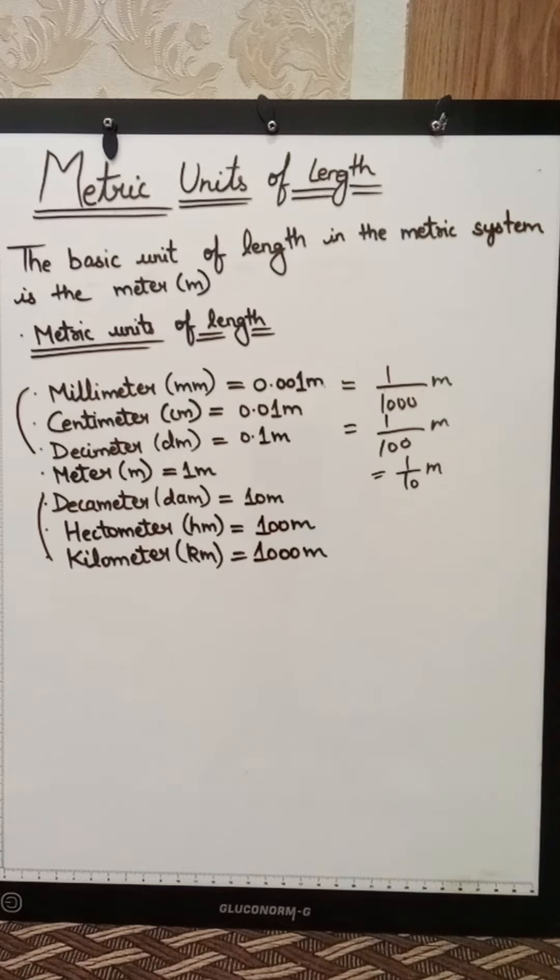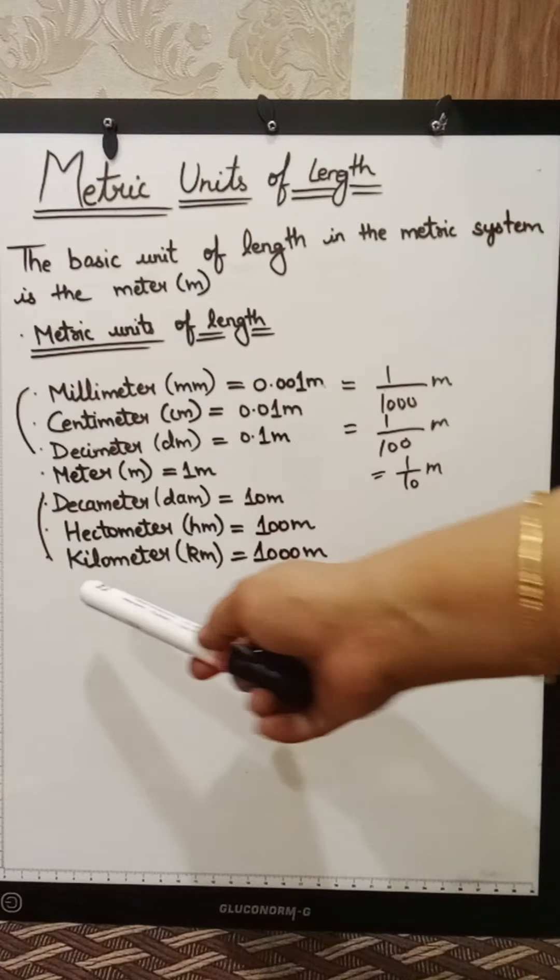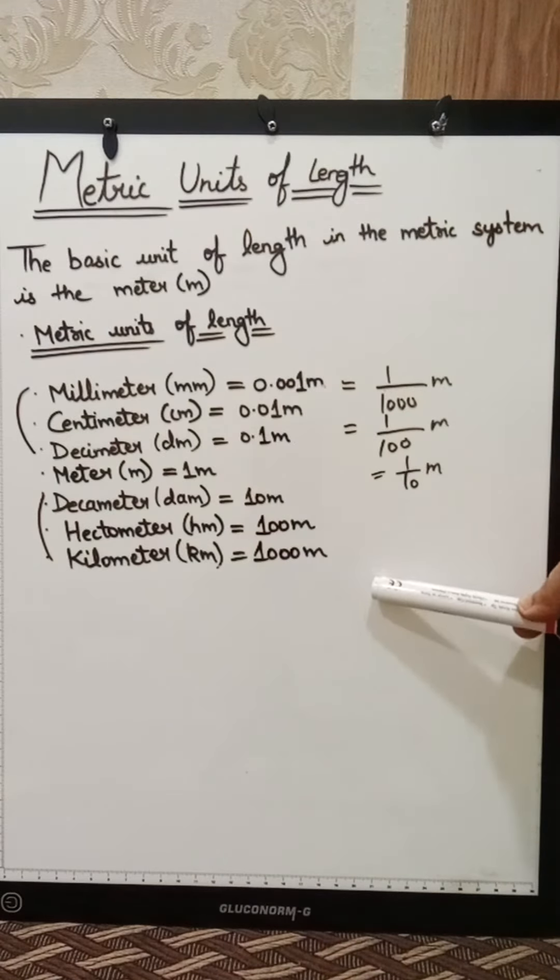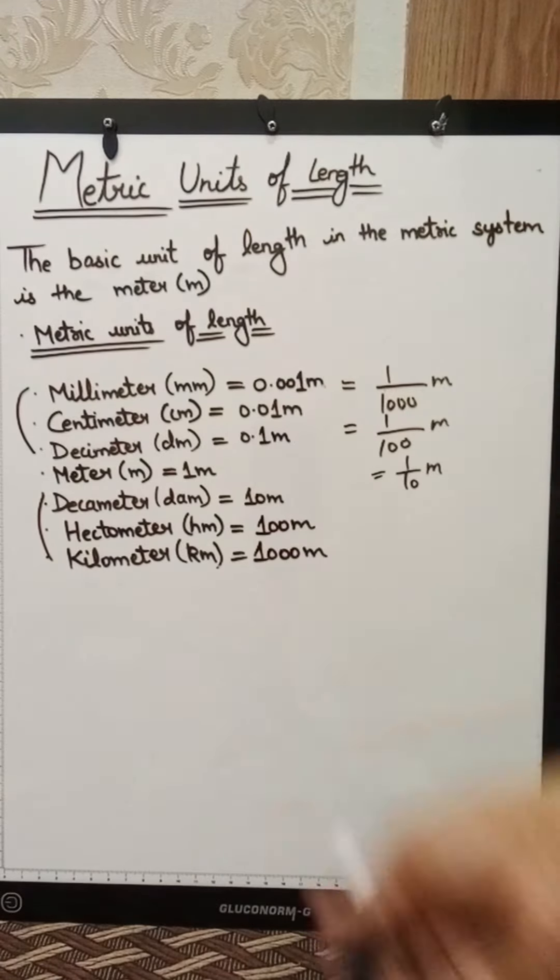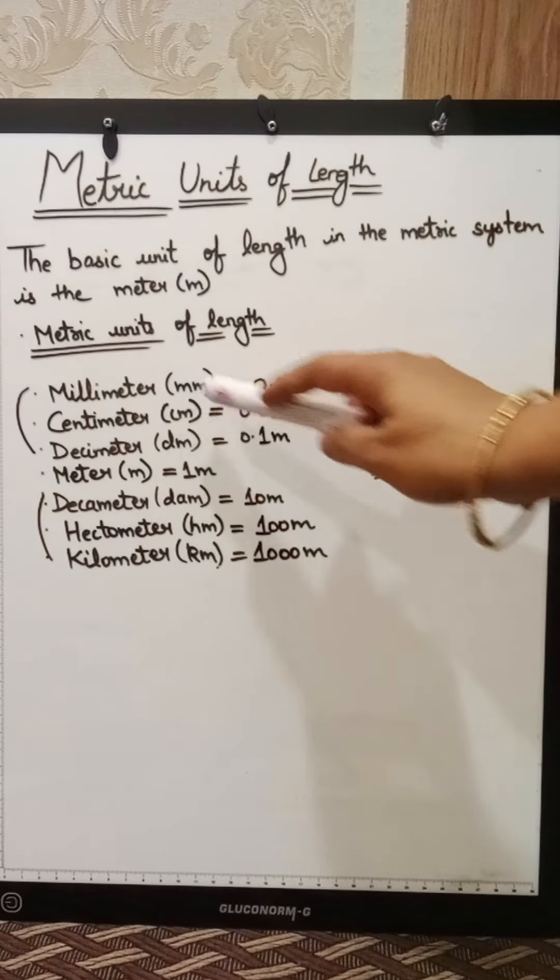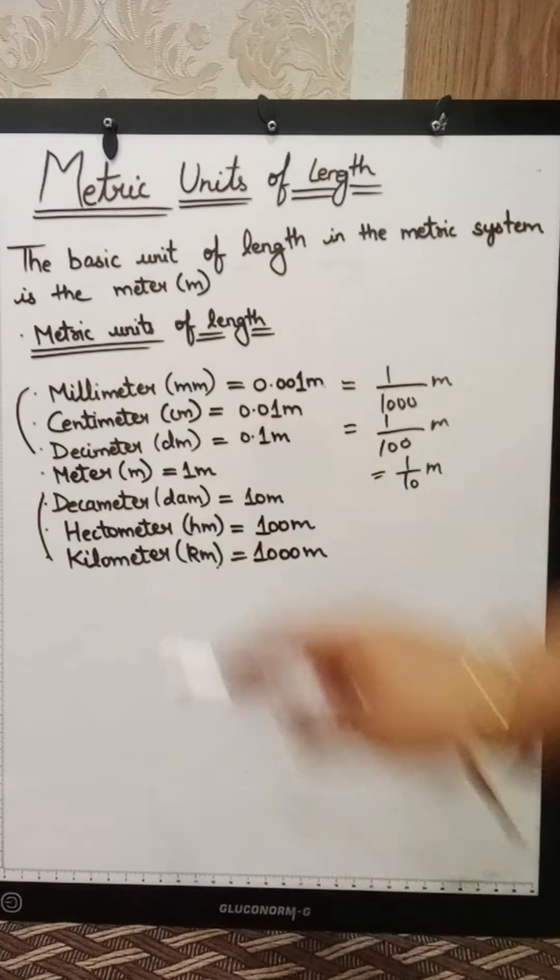These are all the things that I have told you. These are small units. Which one is the biggest unit? The metric unit of length, the largest is the kilometer and the smallest is the millimeter. And these are their signs: MM, CM, DM, meter, dam, HM, kilometer.